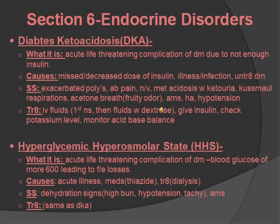Acute life-threatening complications of diabetes: DKA (diabetic ketoacidosis) occurs when there's not enough insulin. Causes include missed or decreased insulin dose, infection, illness, and untreated diabetes. Signs and symptoms include exacerbated polys (polyuria, polydipsia, polyphagia), abdominal pain, nausea, vomiting, metabolic acidosis with ketonuria, Kussmaul respirations, acetone (fruity) breath, altered mental status, headaches, and hypotension. Treatment: IV fluids starting with normal saline then dextrose, insulin, and monitoring potassium levels and acid-base balance.